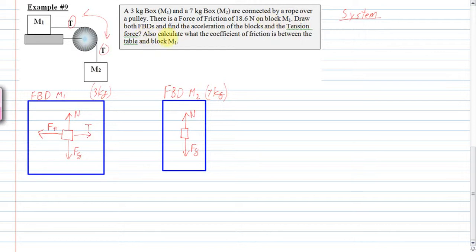So, we drew both free body diagrams as the question asked. And then we're going to find the acceleration and the tension force. And then, we're also, at the end of this, going to calculate what the coefficient of friction is. Because we're not given the coefficient of friction, we're just given the force of friction.